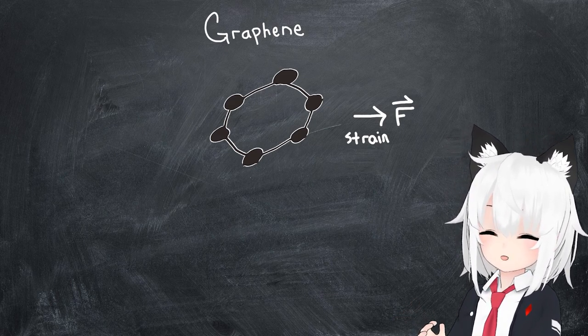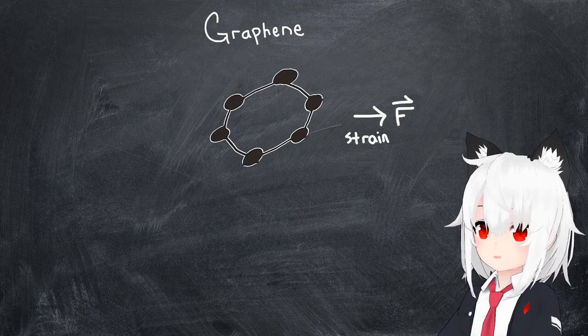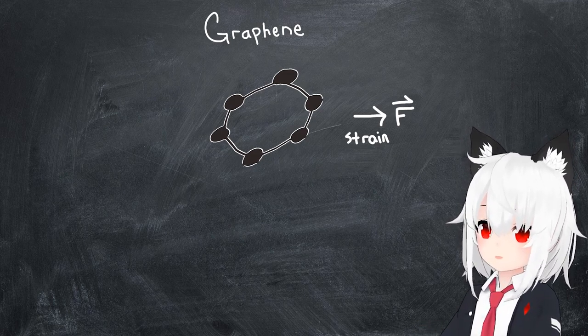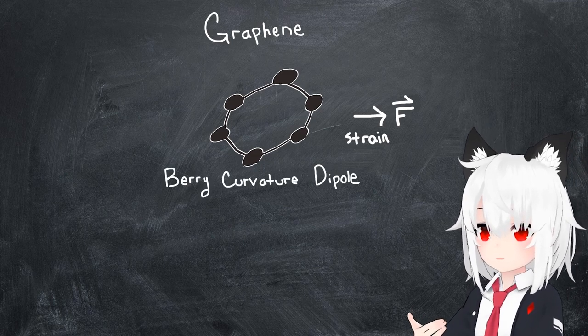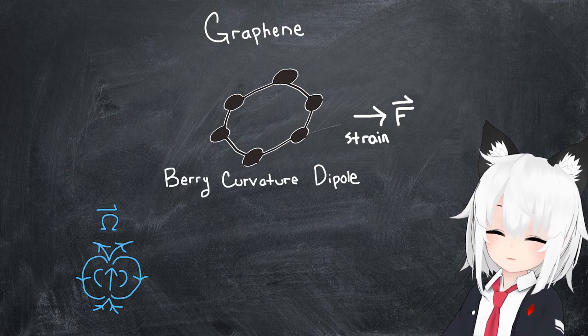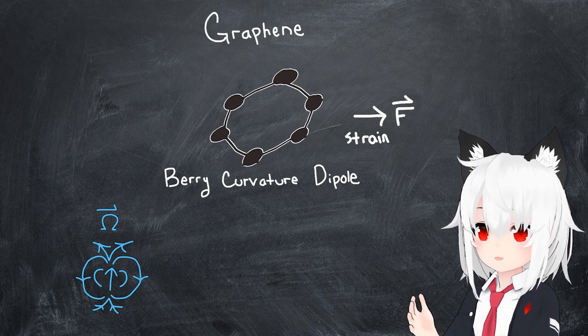To be specific, detailed theoretical calculations show that the Berry curvature in this case could take the form of what's called a Berry curvature dipole, emulating a magnetic dipole and giving rise to precisely calculable effects.